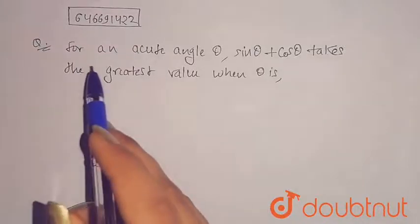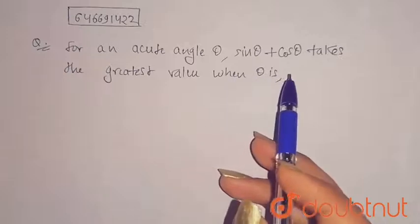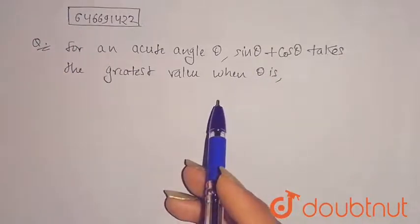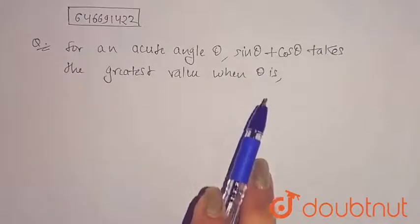It is given that for an acute angle theta, sine theta plus cos theta takes the greatest value when theta is what. So basically you have to find the value of theta when sine theta plus cos theta will give you the greatest value.